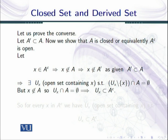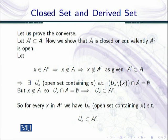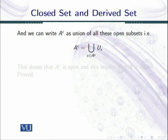So I can do this for every X, kyunki maine ek X koi fixed point nahi liya tha — koi arbitrary point tha. So for every X in A complement, I can find an open set containing that point such that that open set is a subset of A complement. In this way I can write A complement as the union of all such U_x. So A complement is equal to the union over X belonging to A complement of U_x.